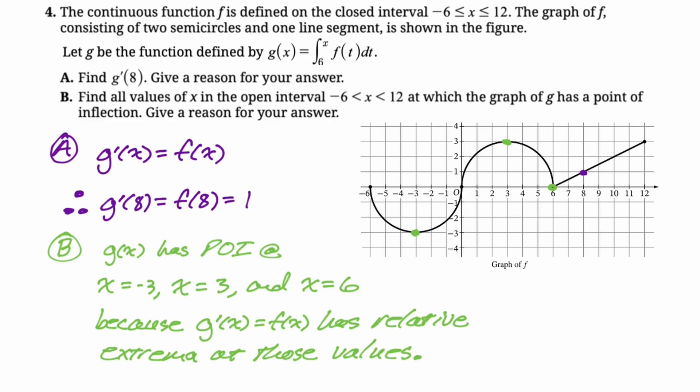It's also valid to say that the slope of g prime changes from negative to positive or positive to negative, or the sign of the slope of g prime changes at those values. I just want to point out that at x equals 6, the graph of f is not differentiable, but that doesn't matter. We don't need f to be differentiable. We just need g to be differentiable. Actually, we don't even need g to be differentiable. We just need g to be continuous.